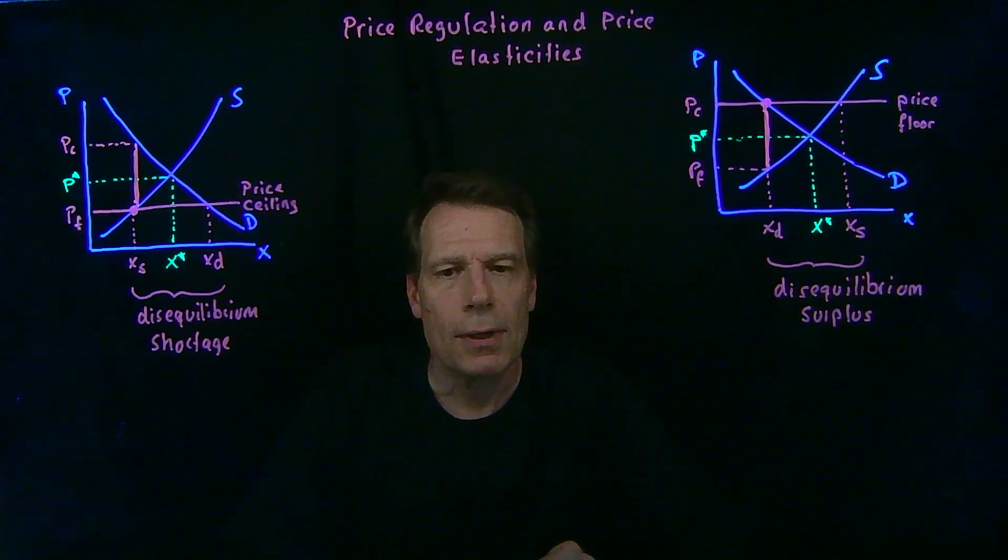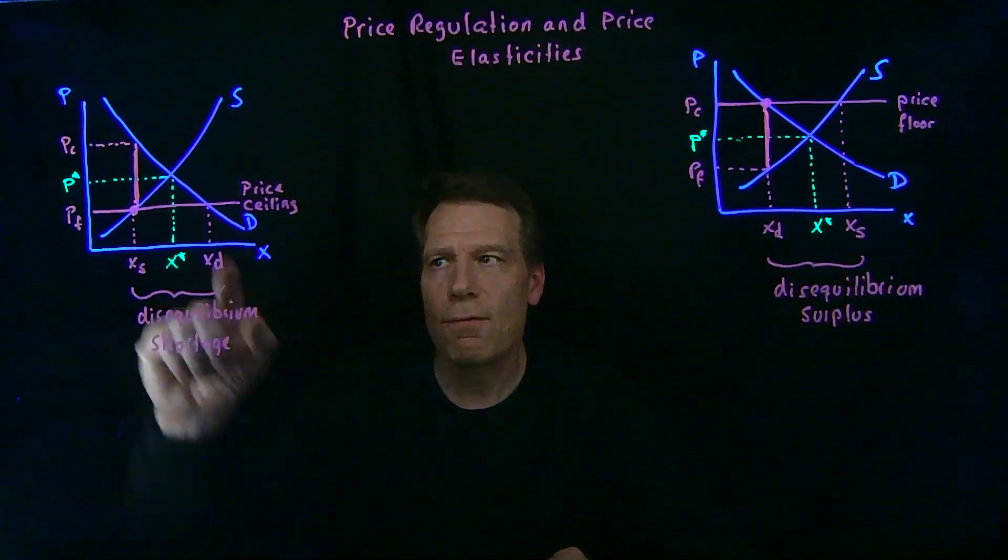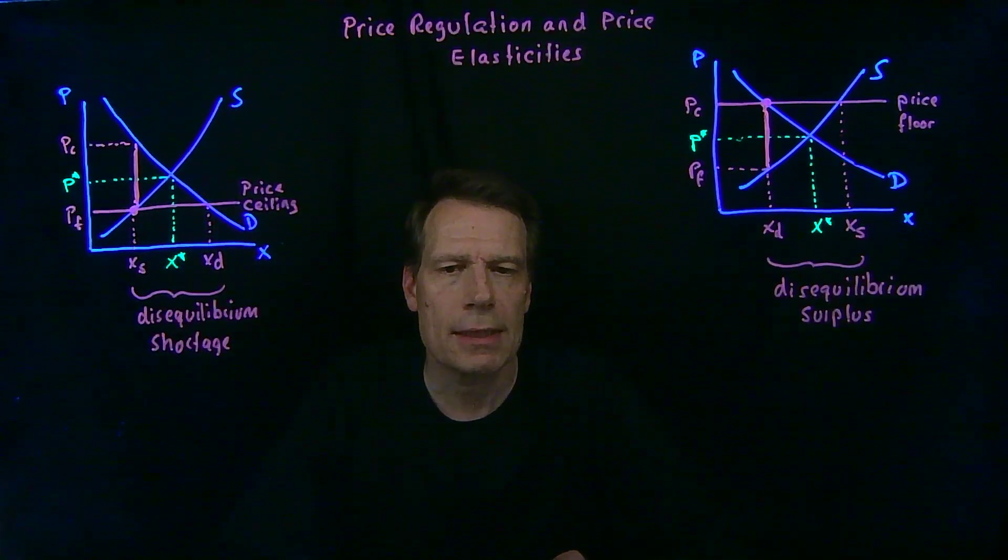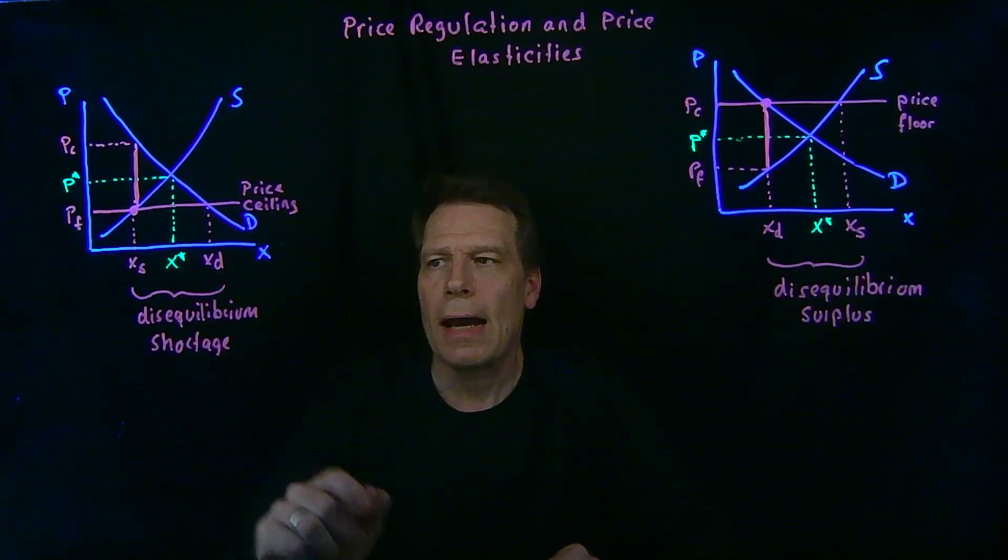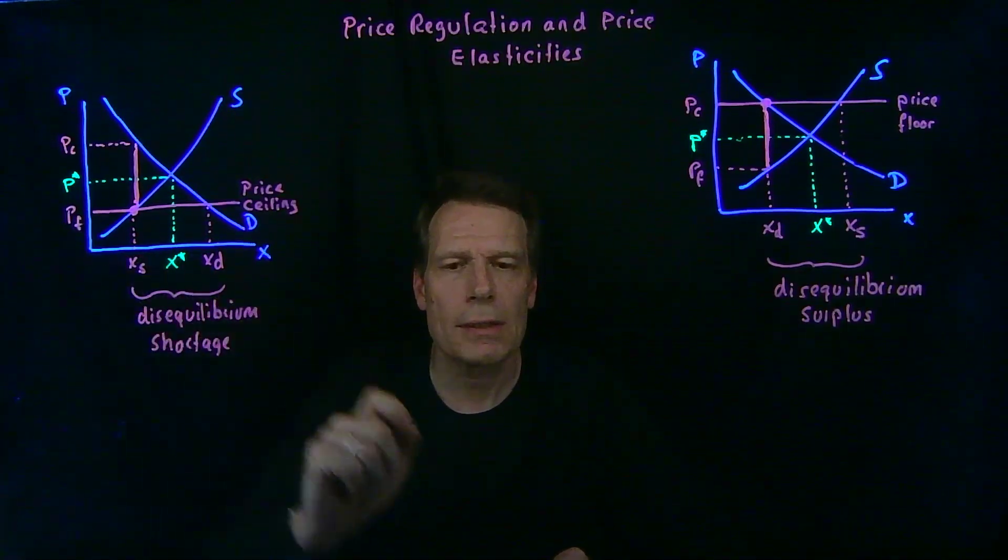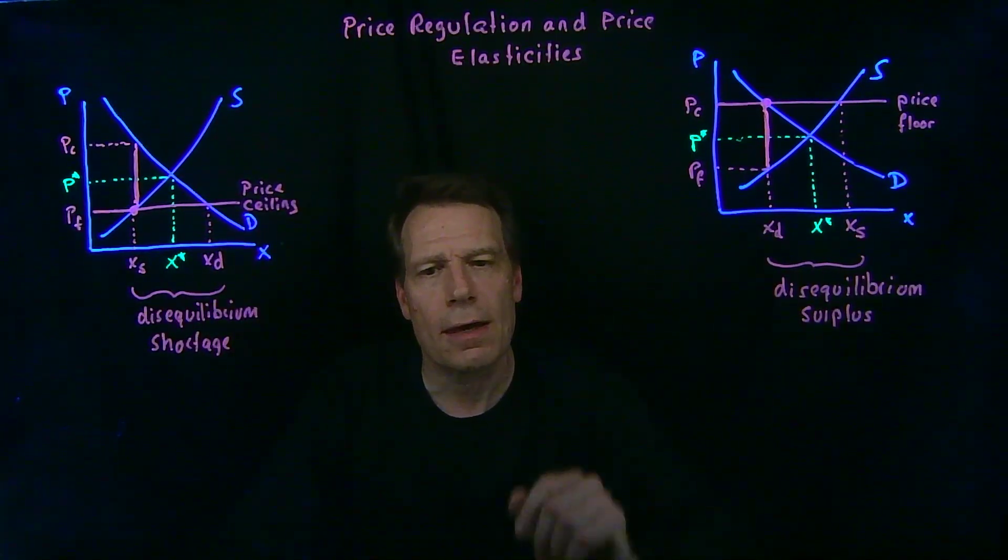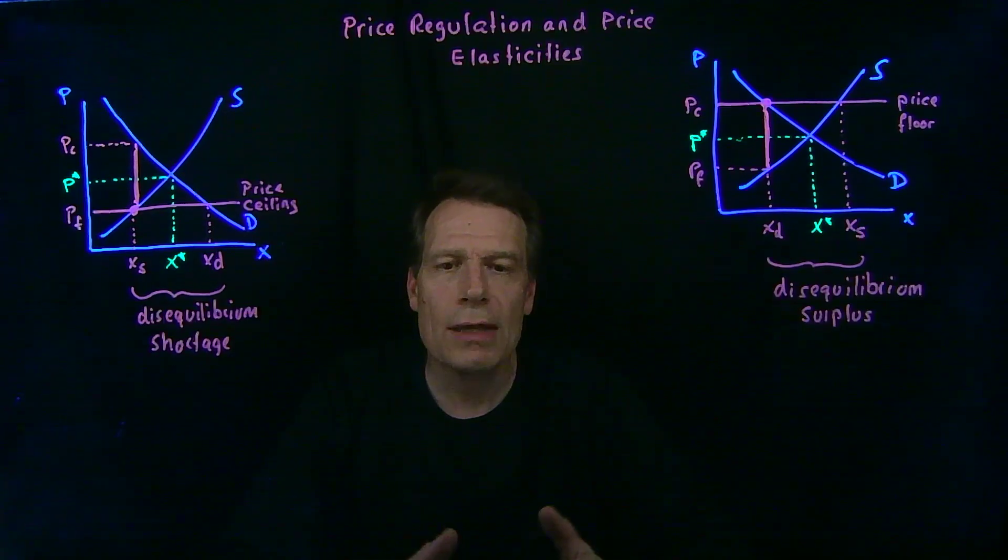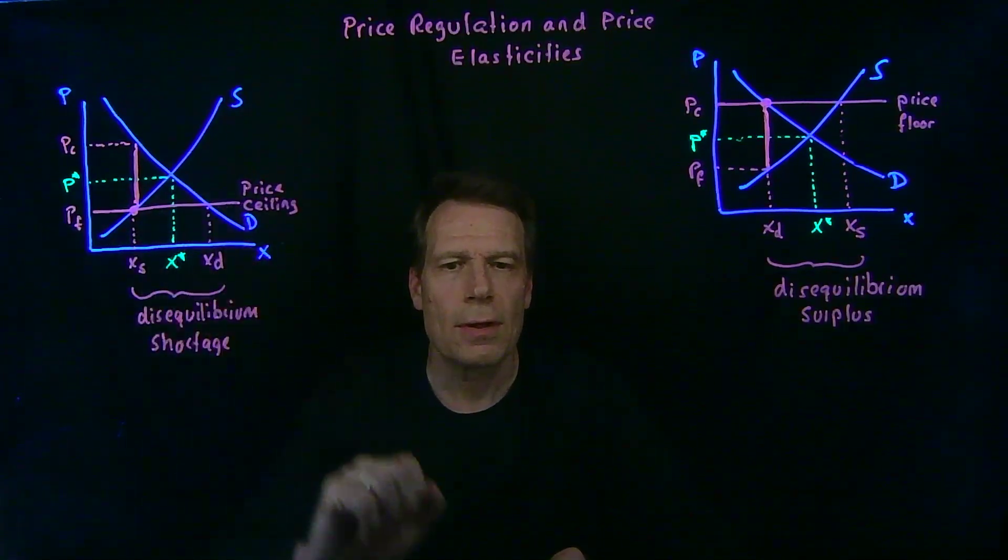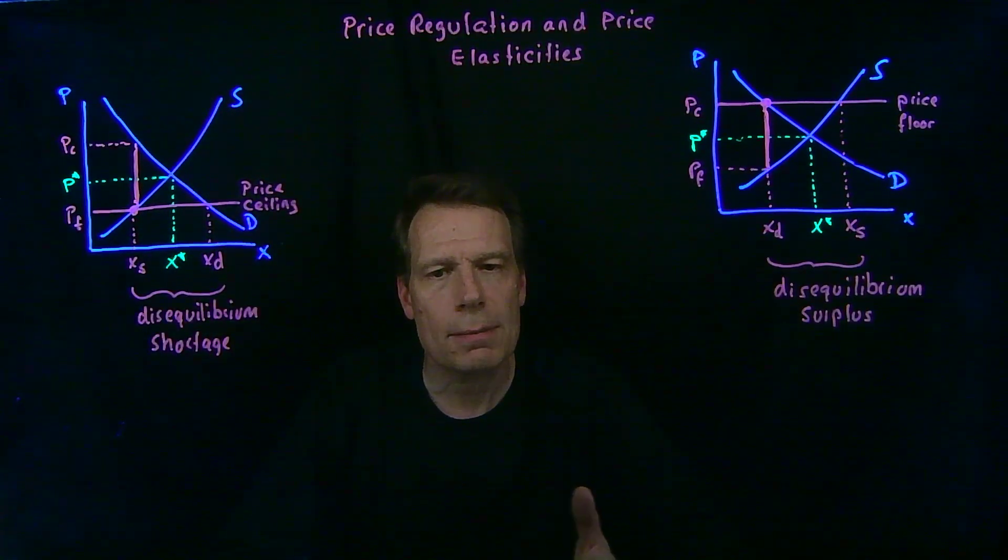Or I could ask you, how is the size of the effort cost affected by price elasticities? Or how is the reduction in quantity in these two markets affected with changing assumptions about price elasticities? So in each of those cases, all you have to do is redraw these graphs with different slopes for demand and supply curves.